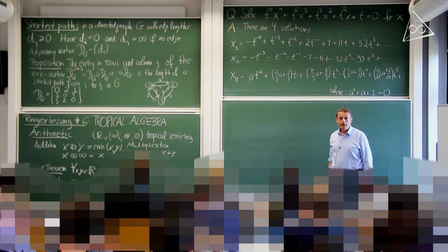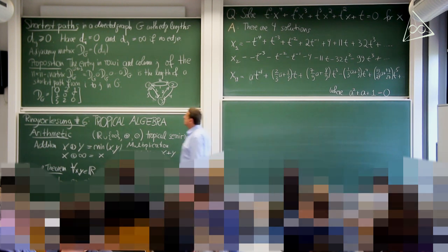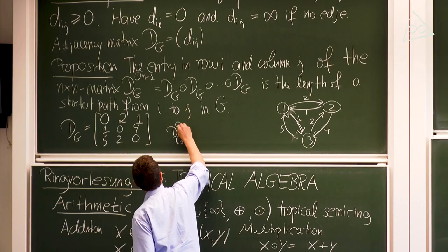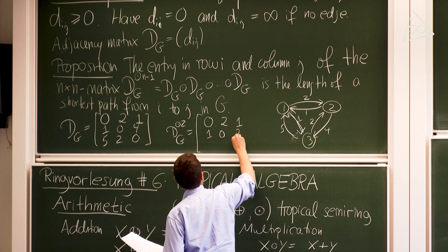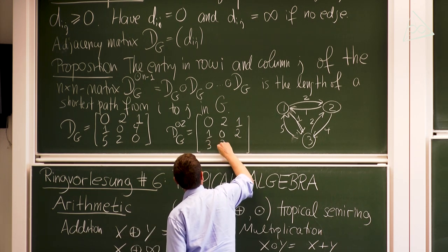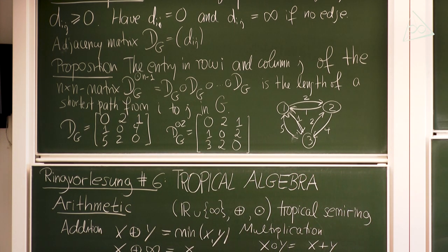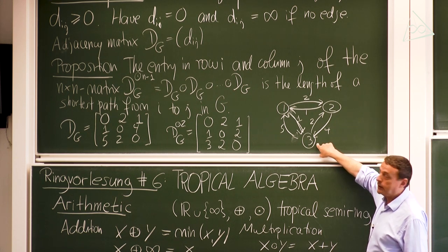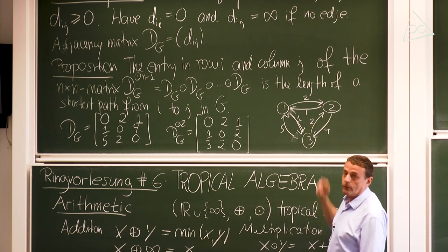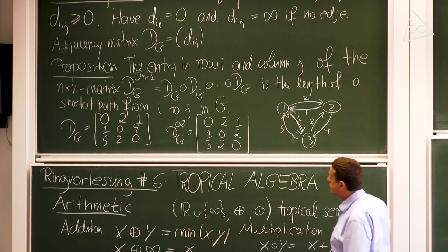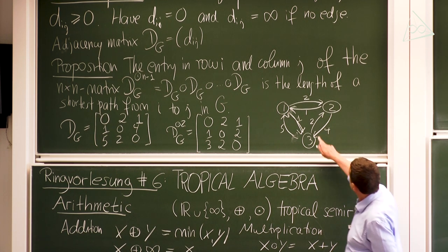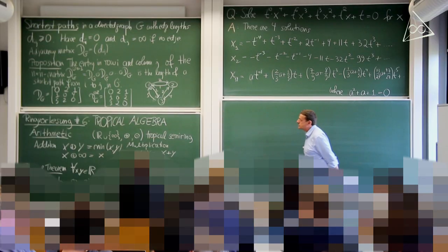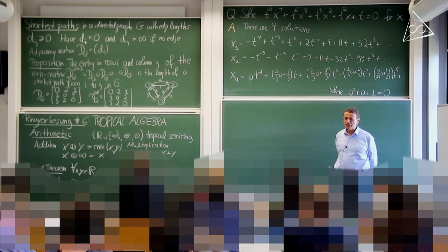If you take matrix DG and multiply it with itself tropically, you get DG squared with entries [0, 2, 1 / 1, 0, 2 / 3, 2, 0]. We gained something when traveling from two to three: a non-stop flight costs four, but going via city one costs only two. Likewise, the entry from three to one dropped to three because we can make a detour and save money. You see this algebraically by multiplying DG with itself.